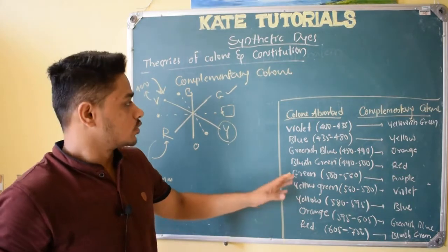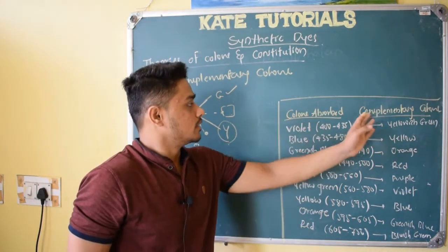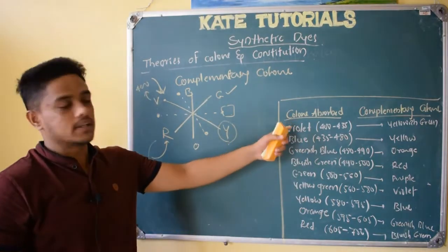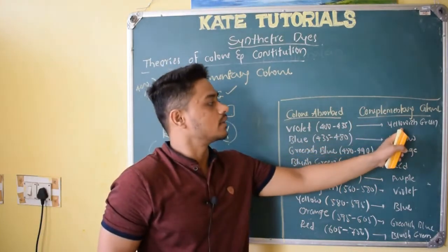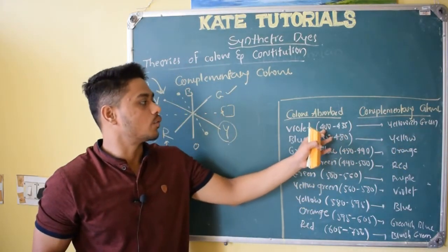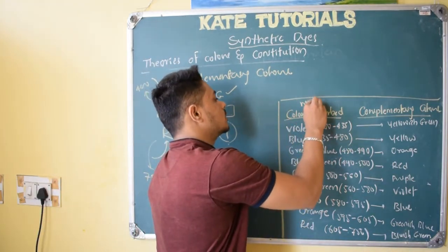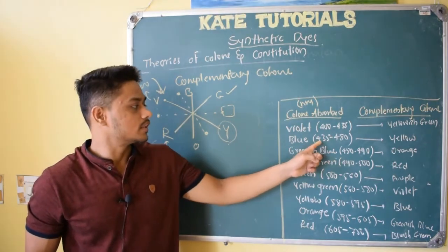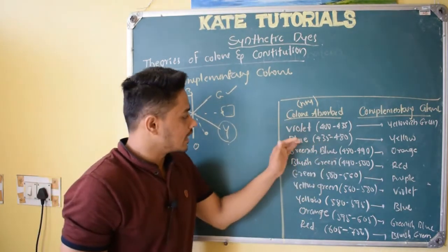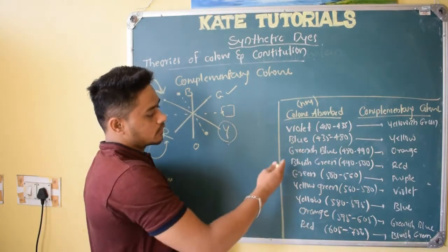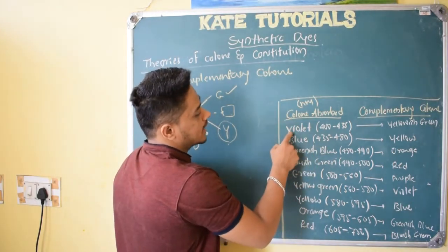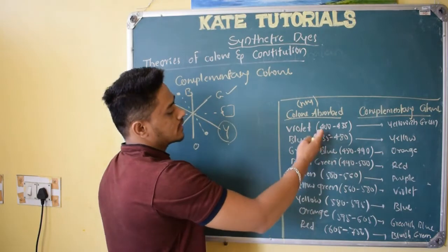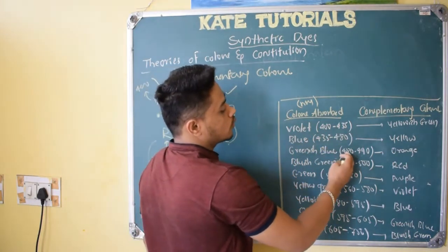Here I have given you a list — color absorbed and the complementary color which it appears. If it absorbs violet, it will look like yellowish green — 400 to 435 nanometer. If it absorbs blue, 435 to 480 nanometer, it appears yellow. Greenish blue, 480 to 490 nanometer, its complementary is orange. All these are in terms of nanometer.